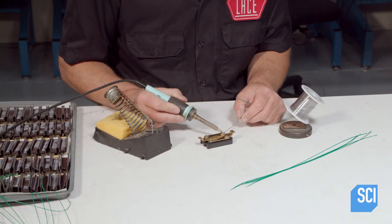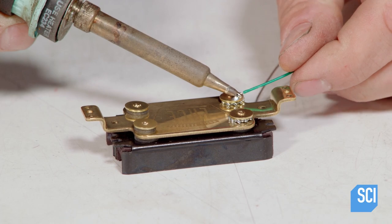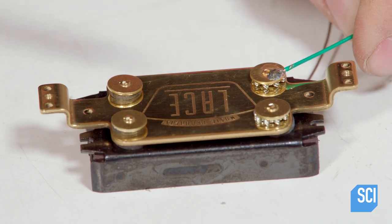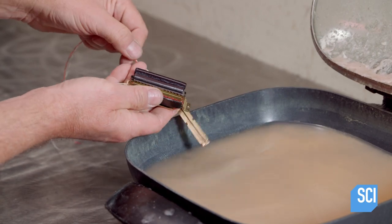He solders a ground wire to the unit and applies more solder to one of the pins in order to connect the coil cables. He inserts the coils in the channels.